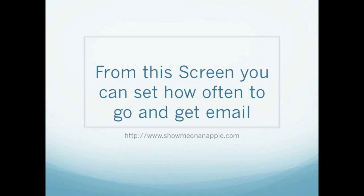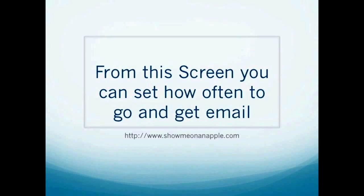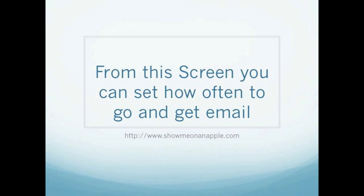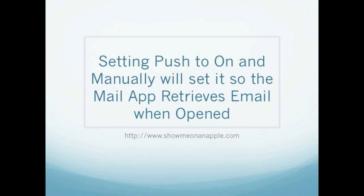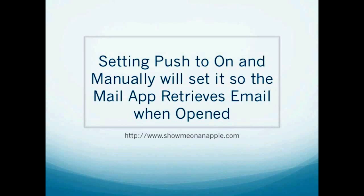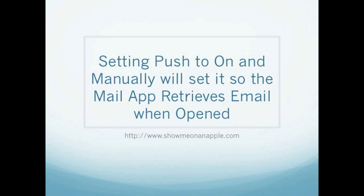In addition to enabling or disabling email push, you can tell it how often to go get your email. You can also tell it some advanced settings as well. So go ahead and click On, and then you can go ahead and choose the Advanced Settings to see additional options for email push.